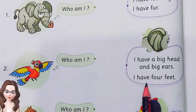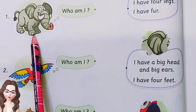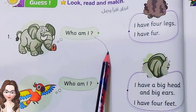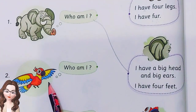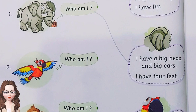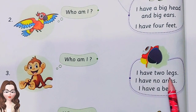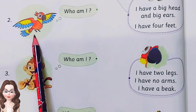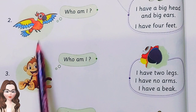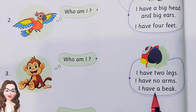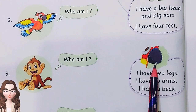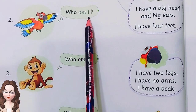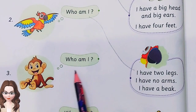I have a big head and big ears. I have four feet. Yes, it's elephant! Who am I? I have two legs, I have no arms, I have a beak — it's a bird! Very good.